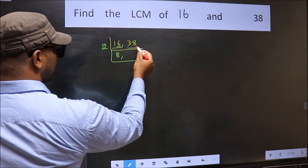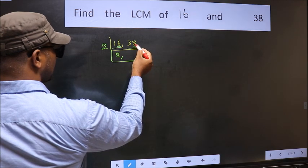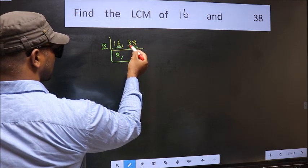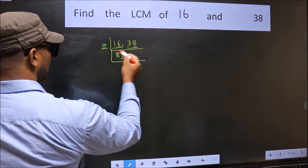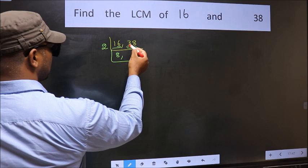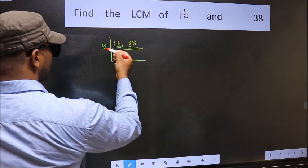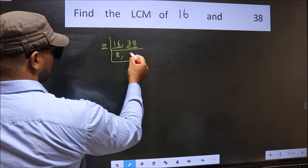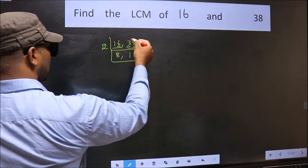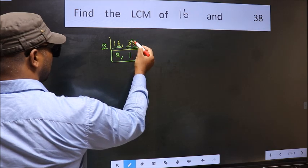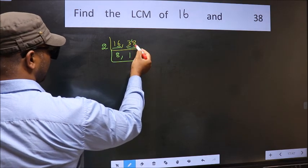The other number 38 has last digit 8, so it is also divisible by 2. The first digit is 3; a number close to 3 in the 2 table is 2. So 3 minus 2 is 1, carried forward, giving 18 — so 38 divided by 2 is 19.